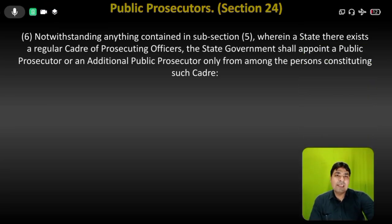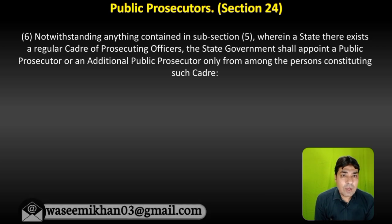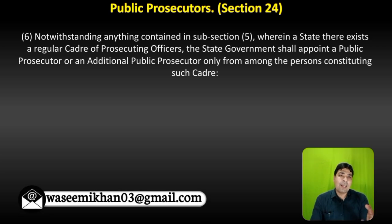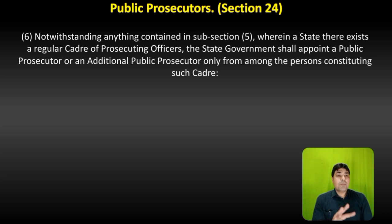Sub-clause 6 deals with: notwithstanding anything in sub-section 5, where in a state there exists a regular cadre of prosecuting officers, the State Government shall appoint a Public Prosecutor or Additional Public Prosecutor only from among the persons constituting such cadre. If a prosecuting officers' cadre exists in the district or state, the State Government can appoint only from within that cadre.